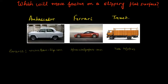Let's say you have an Ambassador car, a Ferrari — a super fast Ferrari — and a truck, and these three vehicles are on a flat and slippery surface. Again, flat and slippery surface, and there is a race among these three vehicles. Which one do you think will win the race?